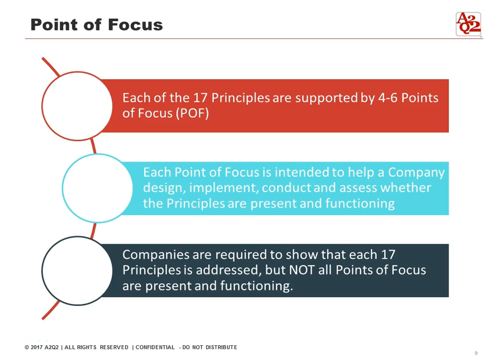Here's a quick recap. Each of the 17 principles is supported by four to six points of focus, which we'll go over in part two. Each point of focus is intended to help a company design, implement, and assess whether the principles are being met. Companies are required to show that each of the 17 principles are addressed, but not all points of focus have to be present and functioning. The key nuance: you must meet the five components, within which are 17 principles, which break down further into points of focus — but as long as you meet the 17 principles, you don't need all points of focus.